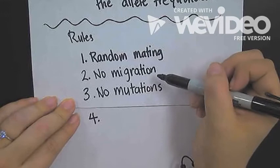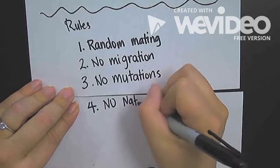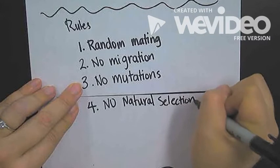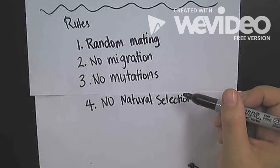Number four, no natural selection. You can't have any particular alleles that are favored over another. Otherwise, you're out of equilibrium.